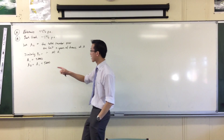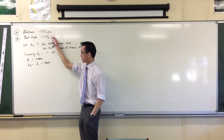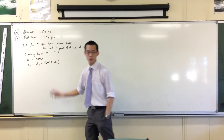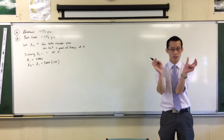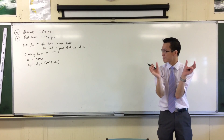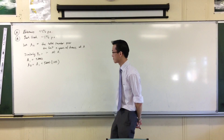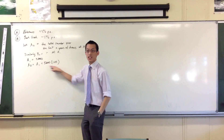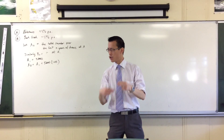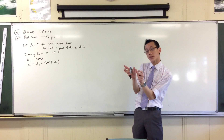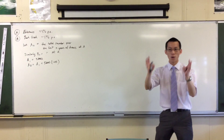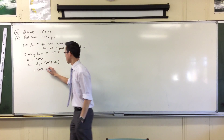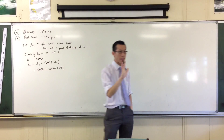Now, a student asks: wouldn't it be 0.05 because the 1 is already included in A1? No — that's a great question, but the answer is no. The reason is because I want the entire audience, not just how much the audience has grown by. In money terms, 0.05 would be just my interest, but I actually want the whole thing — the whole audience in the second year. So this is 5,000 plus 5,000 times 1.05. There's A2.